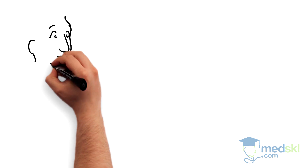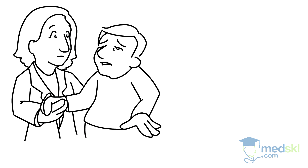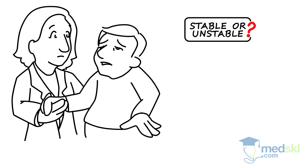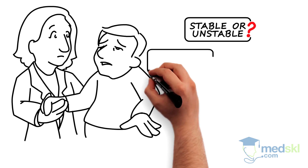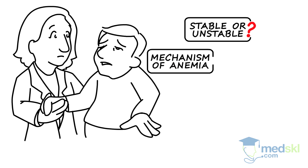To wrap up, in approaching a patient with anemia, first establish if they are stable or unstable. Use two complementary approaches to further guide investigations: determine the mechanism of anemia — either bleeding, a bone marrow production problem, or excessive red cell breakdown.